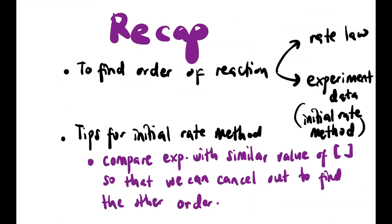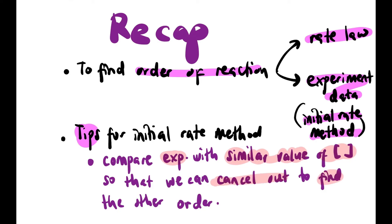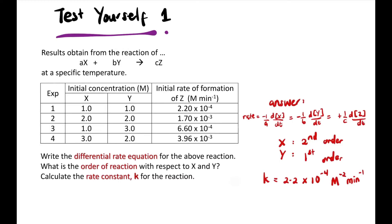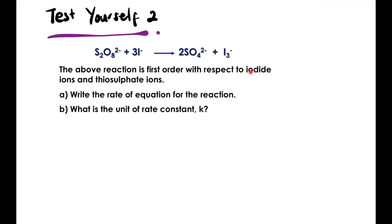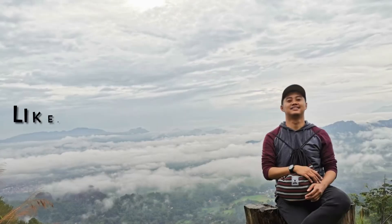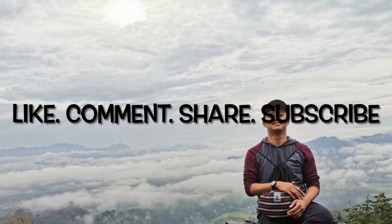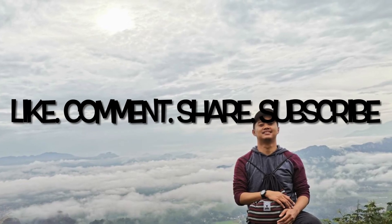So let's do a recap: to find the order of reaction there are 2 ways — from the rate law, or from experimental data, also called the initial rate method. The tip for the initial rate method is to compare experiments that have similar concentration values so you can cancel them out, making it easier to find the other order. Test yourself with the given questions — you should be able to get those answers. Pause the video to try them. That's the end of 9.1 — don't forget to like, comment, share, and subscribe to the channel. Thank you.